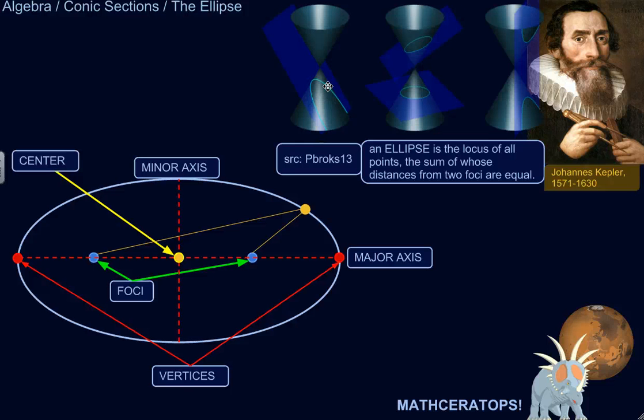All right, so the ellipse. Ellipses are very interesting figures. They're one of the conic sections. And a conic section is a figure that is formed when a plane intersects a cone. It's conic. It comes from cone.